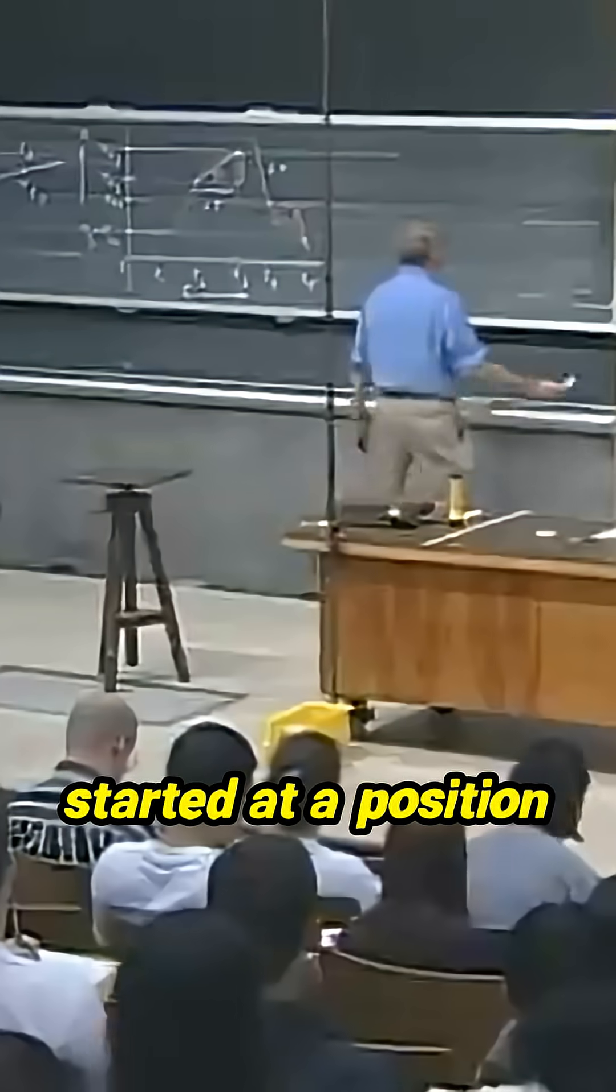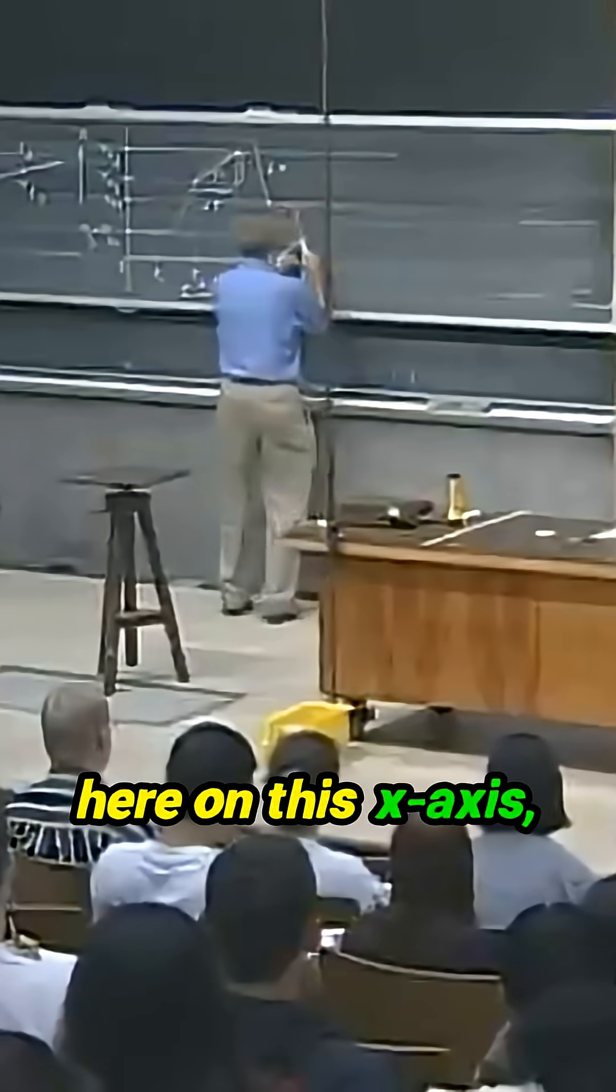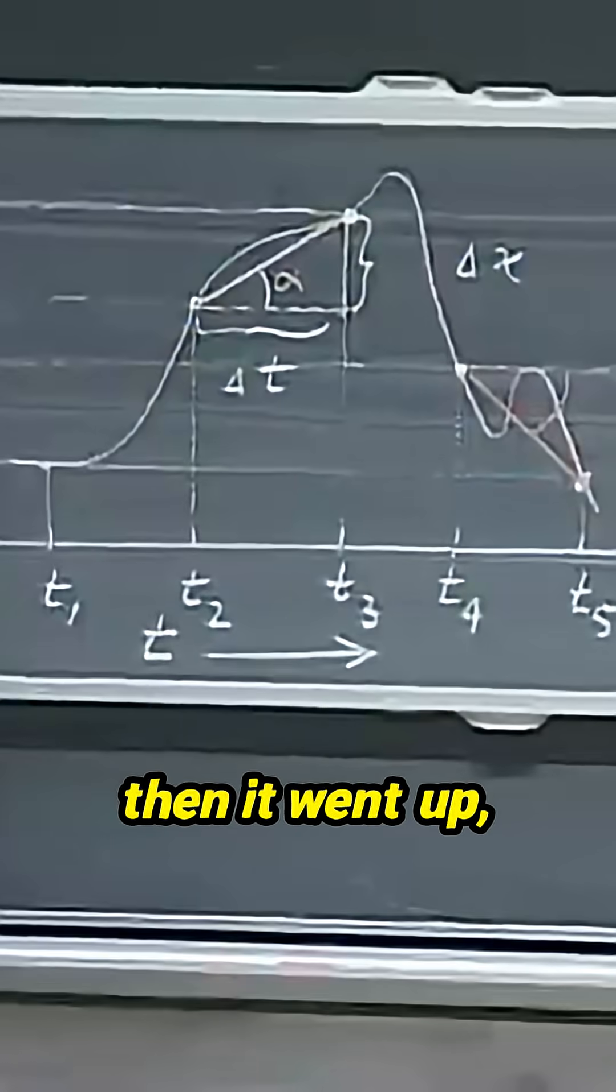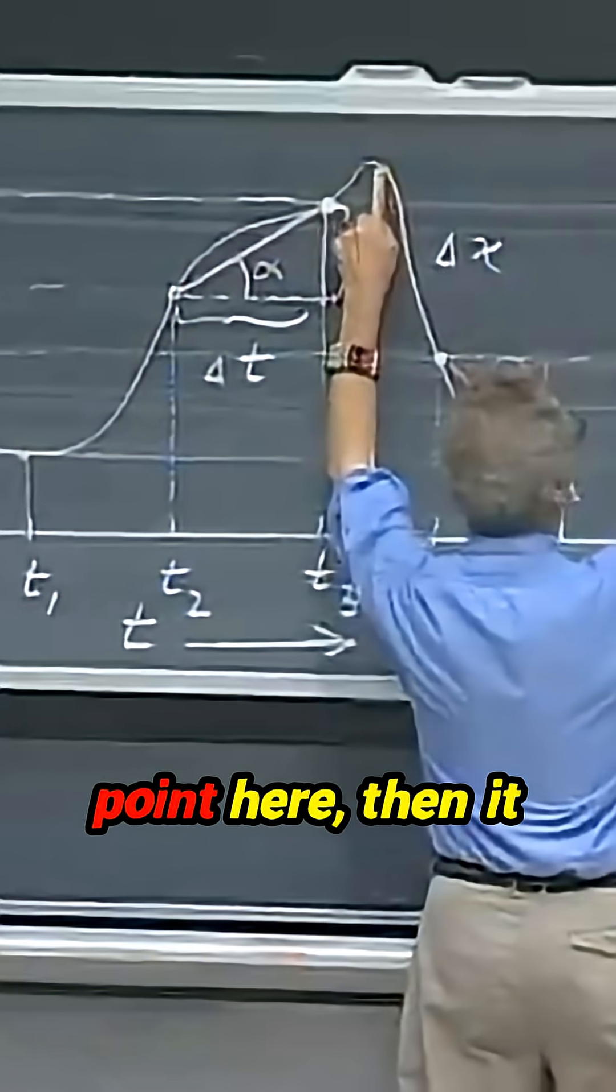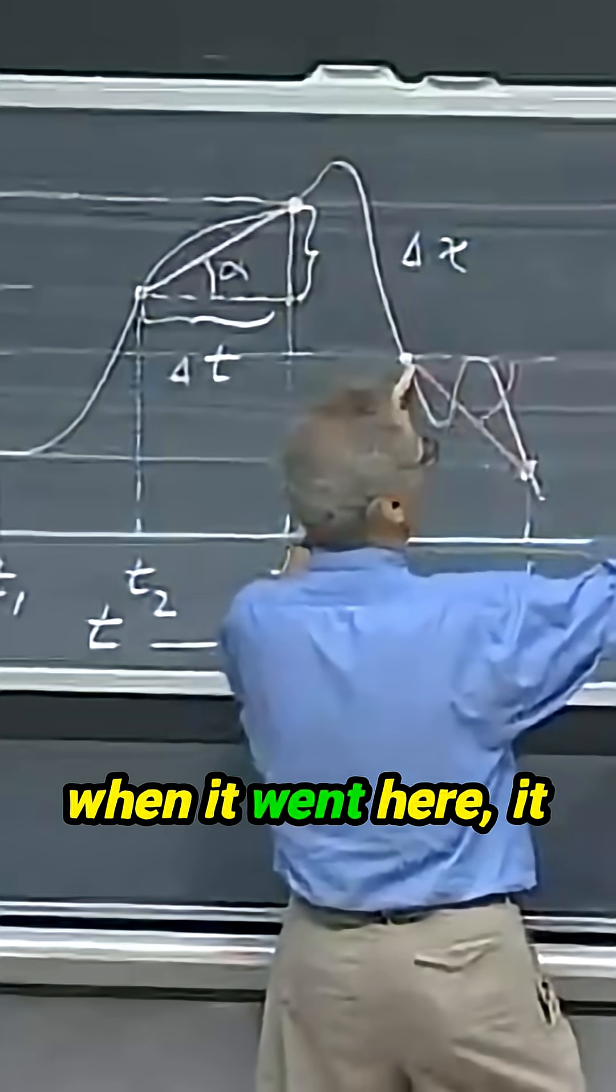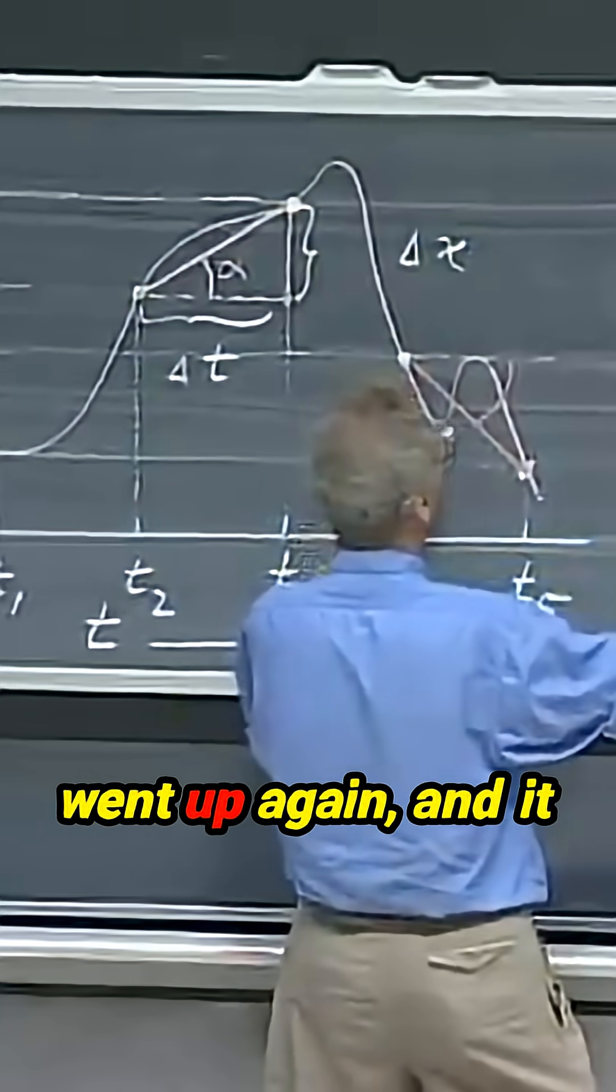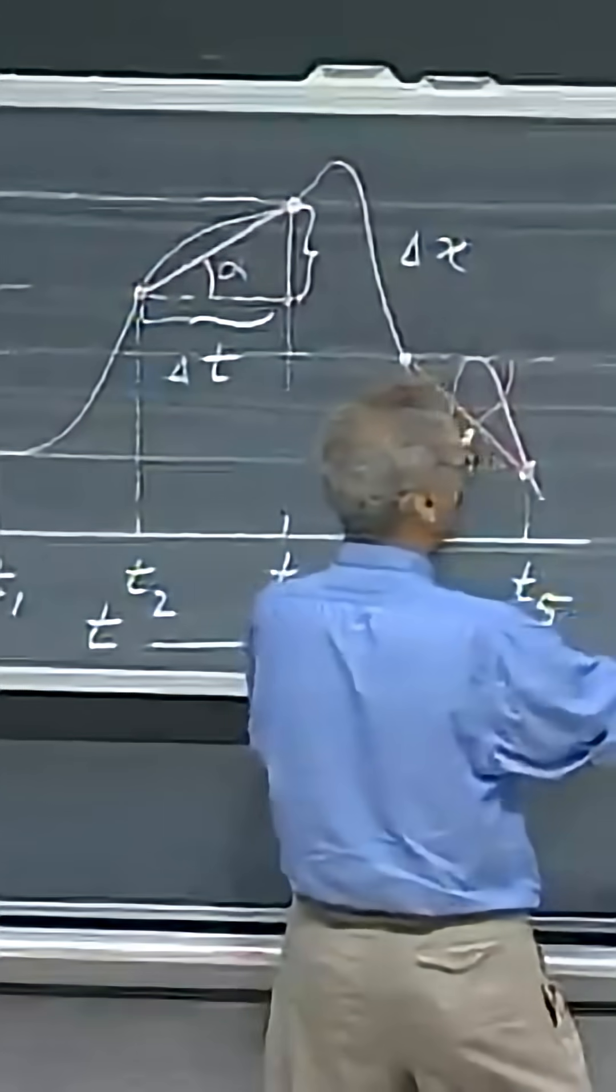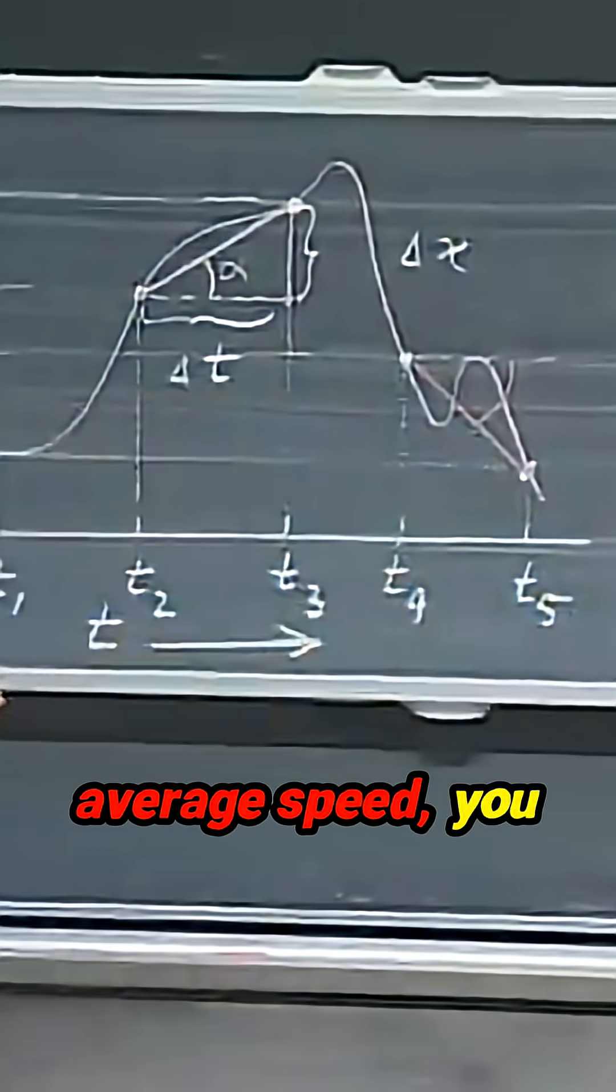The object started at a position here on this x-axis, and then it went up, reached the highest point here, then it went down, and when it went here, it went up again, and it comes down again, and it's back. In order to find the average speed,